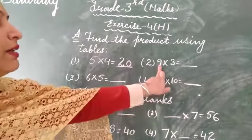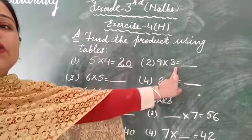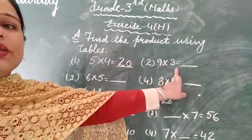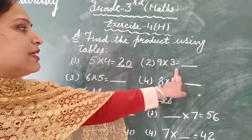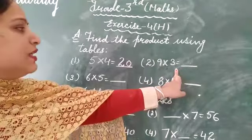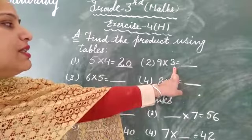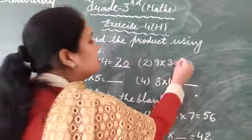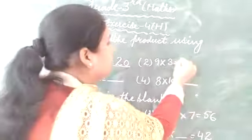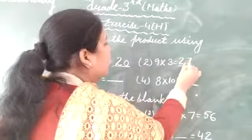Second part, 9 multiply with 3. Start to read out table of 3. 3-1s are 3, 3-2s are 6, 3-3s are 9, 3-4s are 12, 3-5s are 15, 3-6s are 18, 3-7s are 21, 3-8s are 24, 3-9s are 27. So write here 27.